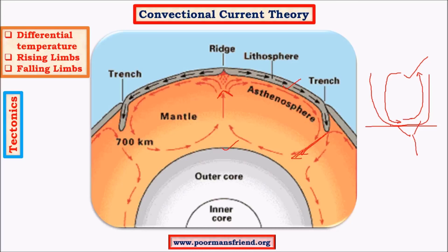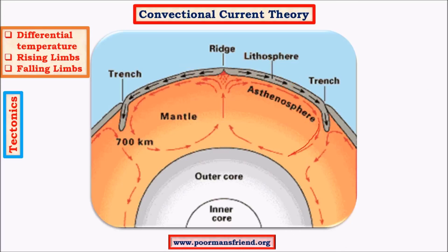When two rising limbs meet, additional matter accumulates below the earth's crust. This accumulated matter with the involvement of rising limbs creates huge pressure, resulting in stress in the lithospheric plate. As a result, lithospheric plates move away from each other, creating a weak spot between them. Where there are falling limbs, matter moves downward toward the earth's core, creating negative pressure, which pulls the plate toward the falling limbs — resulting in a trench. So ridges occur near rising limbs and trenches near falling limbs.